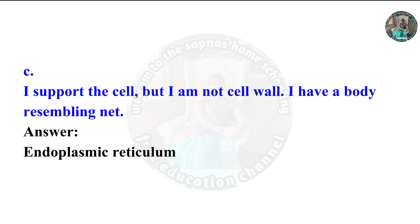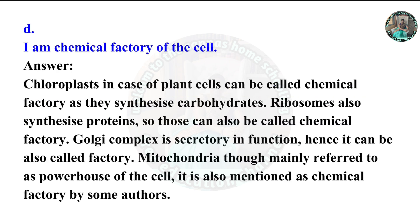Answer C: 'I support the cell but I am not the cell wall; I have a body resembling a net.' Answer is Endoplasmic Reticulum. Answer D: 'I am the chemical factory of this cell.' Chloroplast in the case of plant cells can be called a chemical factory as they synthesize carbohydrates. Ribosomes also synthesize proteins, so those can also be called a chemical factory. Golgi complex is secretory in function, hence it can also be called a factory.